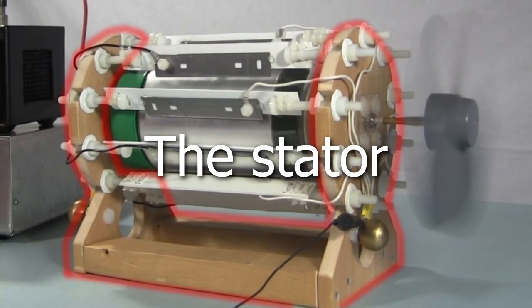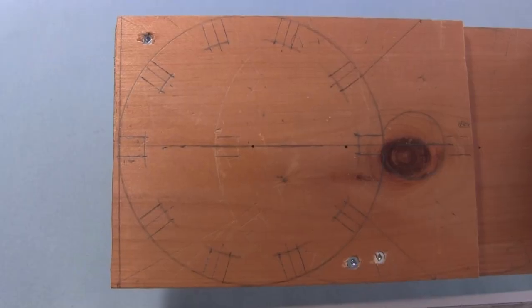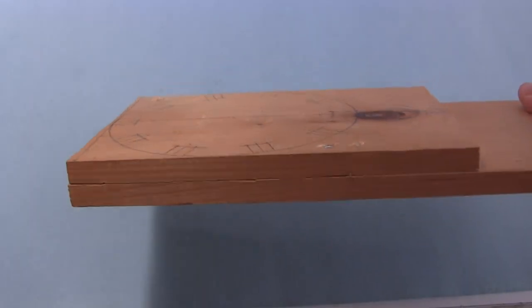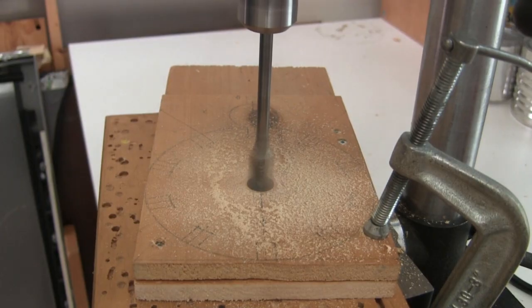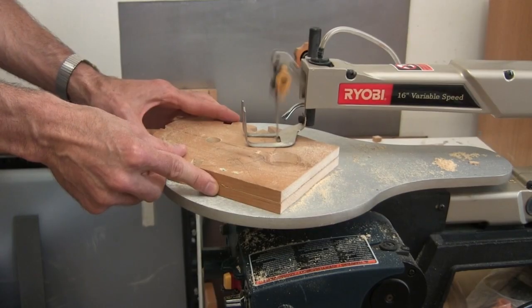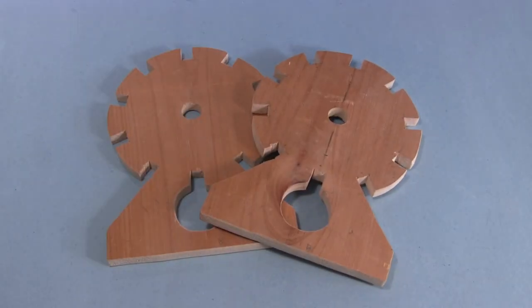Now to make the stator. I start by drawing the shape for an end piece on wood and screwing two pieces together. Next comes drilling a hole for the shaft and cutting them out. The result is these two end pieces.